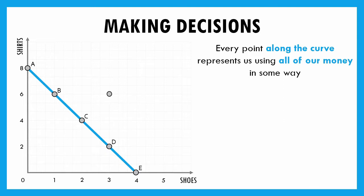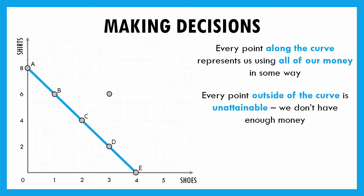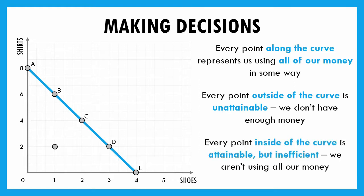What if I got up to the cash register with six shirts and three pairs of shoes? I wouldn't be able to make that purchase — I don't have enough money. Any points outside the line are unattainable because we don't have enough money. Six shirts and three pairs of shoes would cost $360, and I only have $240. But what if I only had two shirts and one pair of shoes? That's attainable, but it's inefficient. We set out to spend our money on back-to-school clothes and didn't. So all points inside are attainable but represent an inefficient use of our money.